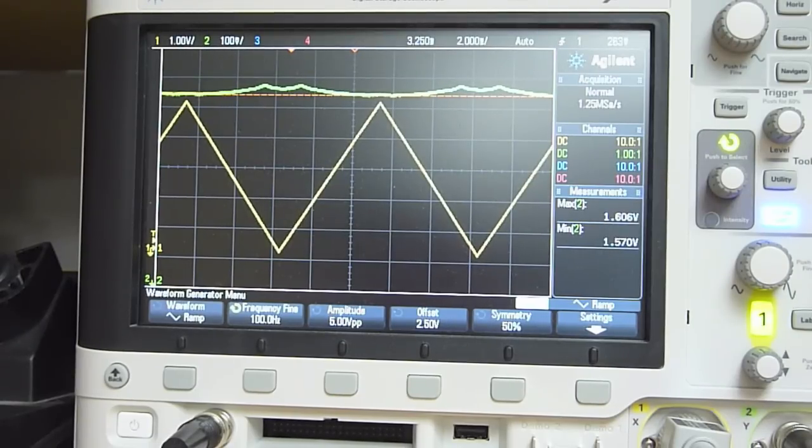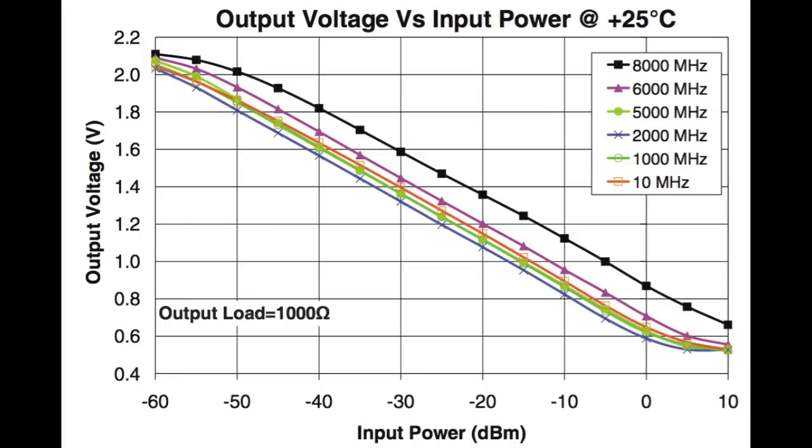So this is the calibration curve of the Mini-Circuits power detector. About a 2 volt range gives you a 70 dB range of power measurements.